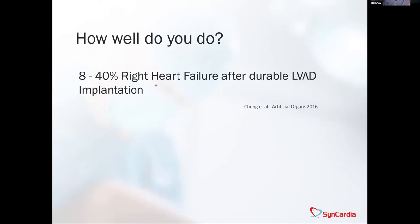When identifying biventricular failure — and in particular when going through the literature, depending on the kind of center and multi-center experience — when I read this paper, anywhere from 8 to 40% of all patients who got durable devices experienced some sort of right ventricular failure after a durable LVAD. They had multiple different strategies and varying levels of results, from survival post-implant to transplant and transplant survival, usually in the 40 to 60% range.